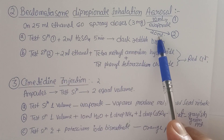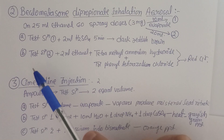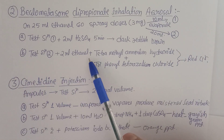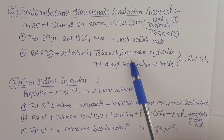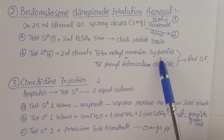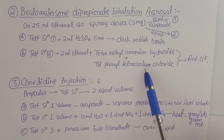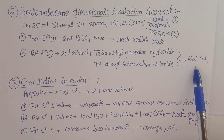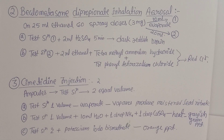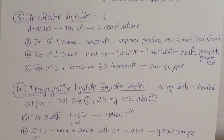Second test for beclomethasone: to Test Solution 2 (evaporated 20 ml), add 2 ml of ethanol, then add tetramethylammonium hydroxide and triphenyltetrazolium chloride. This gives a red color, confirming the presence of beclomethasone in the aerosol.